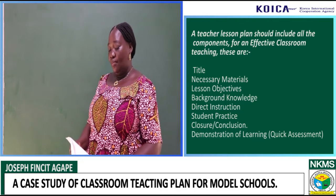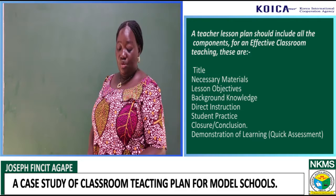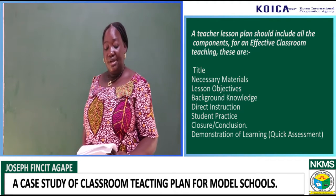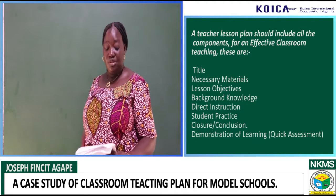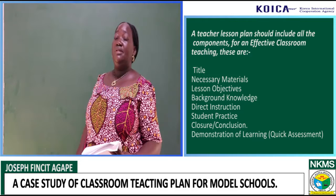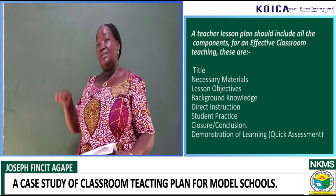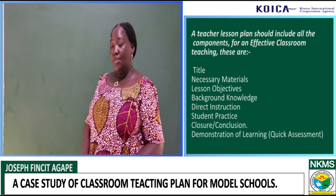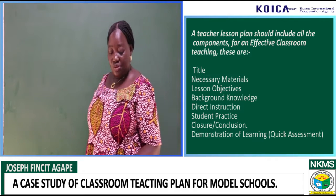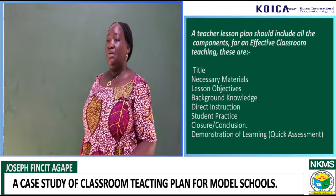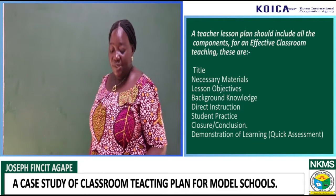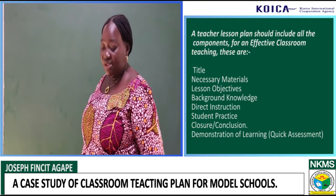You need to know the background knowledge that the children have — the previous knowledge they have before now. Then there's the direct instruction you need to pass across. If you know the background knowledge they already have, it will help you to impact new knowledge into them. Then give room for students' practice and your closure. After the closure, allow the children to have a quick assessment, either by giving them assignments or whatever it is.